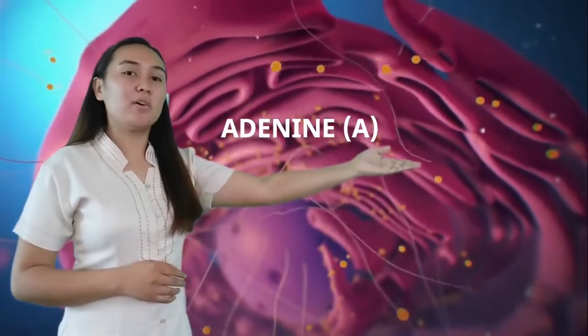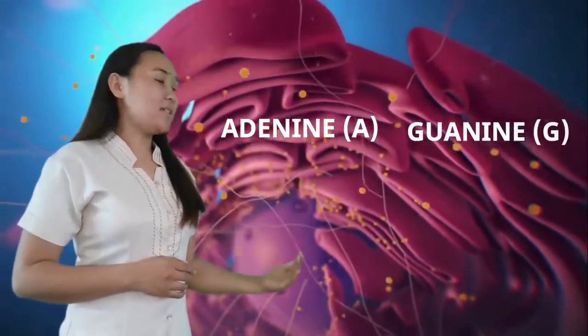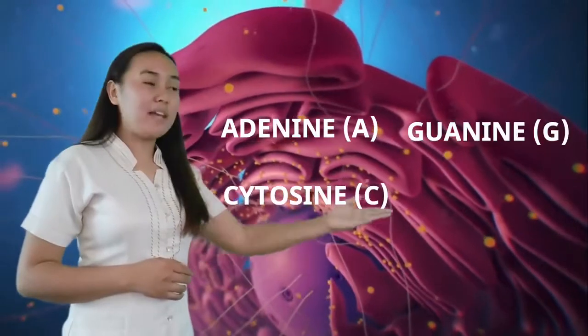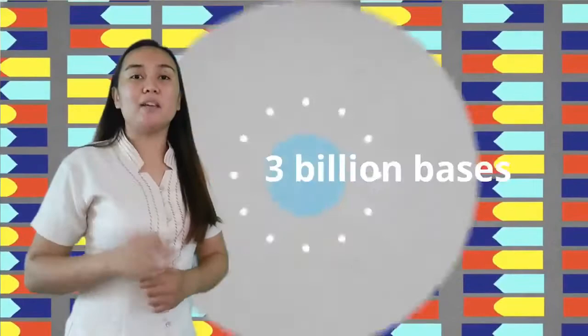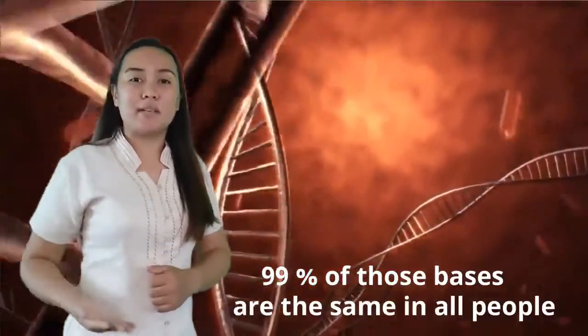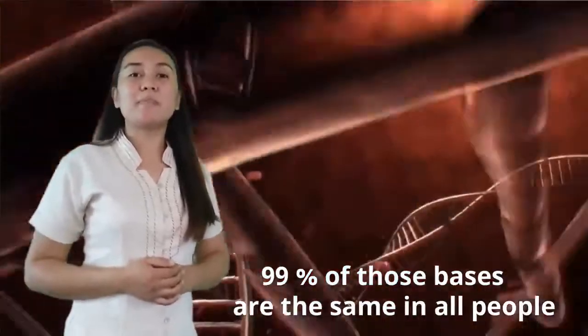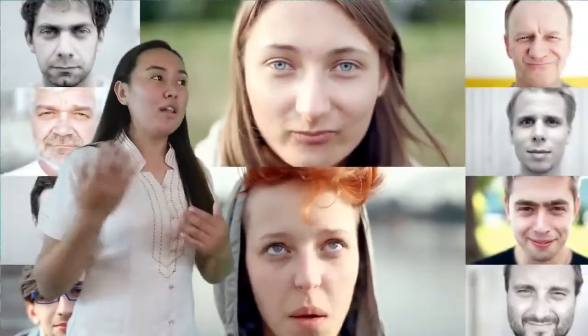Adenine (A), guanine (G), cytosine (C), and thymine (T). Human DNA consists of three billion bases and more than 99% of these bases are the same in all